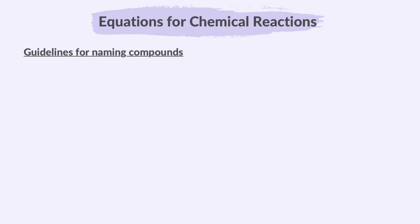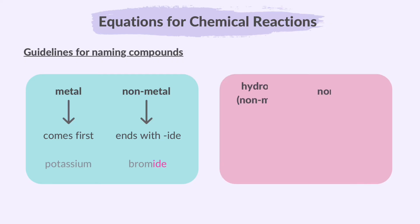Let's look at some guidelines for naming compounds. If the compound has a metal and a non-metal, the metal comes first. The non-metal ends with IDE, for example potassium bromide. If the compound consists of two non-metals and one of them is hydrogen, then hydrogen comes first, for example hydrogen bromide.